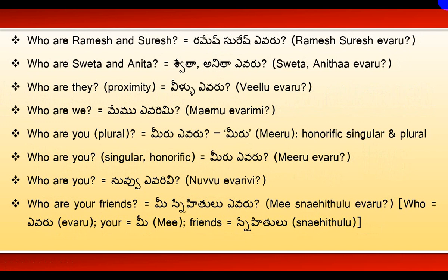Who are Ramesh and Suresh? means Ramesh, Suresh, Yavaru. Here, 'Who' means Yavaru. 'And' means Maryu, but it's optional — no need to use the word Maryu between Ramesh and Suresh. The actual meaning is Ramesh, Maryu, Suresh, but while speaking, we skip this word. We just say Ramesh, Suresh, Yavaru. Similarly, Who are Sveta and Anita? becomes Sveta, Anita, Yavaru.